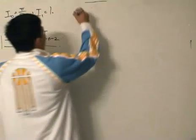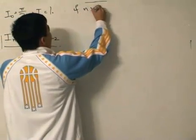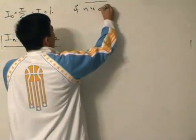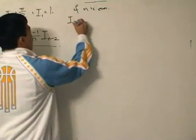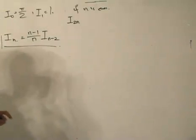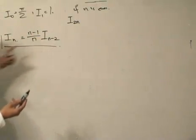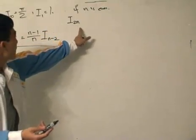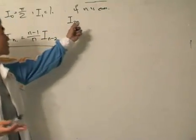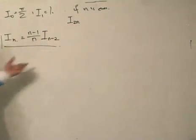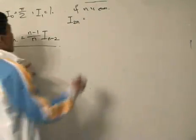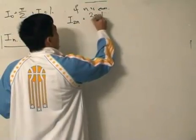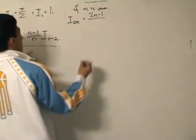First case: if n is even. To represent an even degree, I write I₂ₙ — because if you multiply n by 2, you get an even number. Substituting into the reduction formula, I get (2n − 1) / 2n times I₂ₙ₋₂.